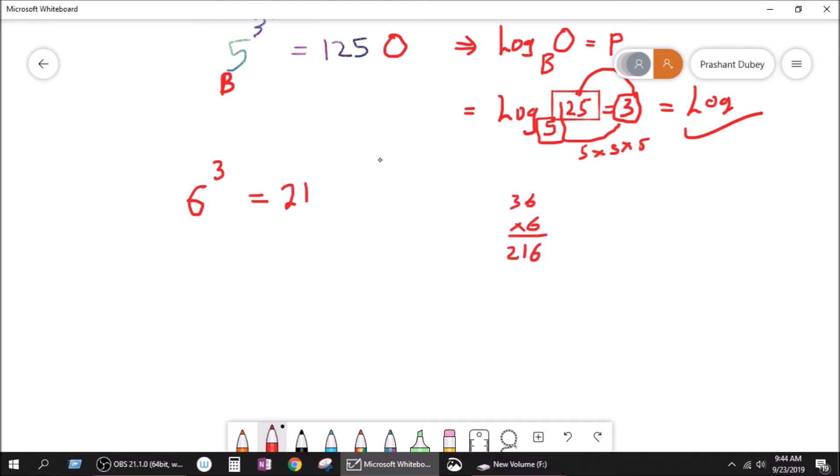So it's 216. So 6 to the power 3 is equal to 216. We can say that 6 is the base, 3 is the power, and 216 is the output. So log is written in this form: log base output equal to power. So log, our base is 6, and our output is 216, and our power is 3.